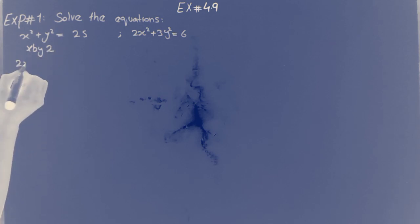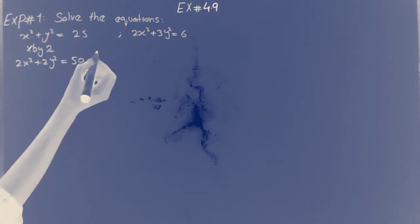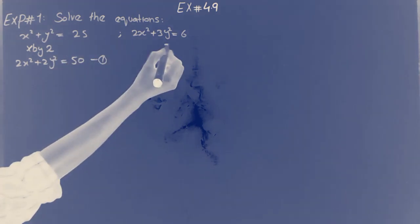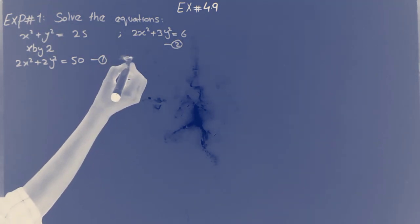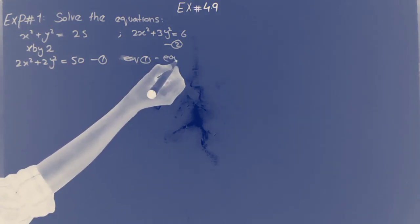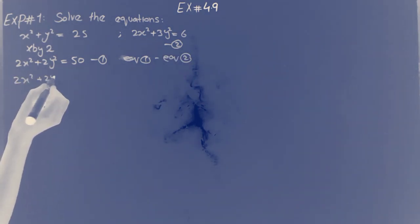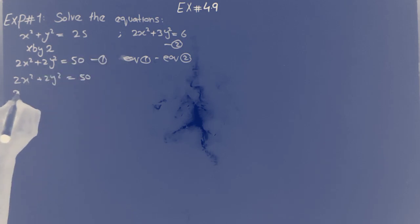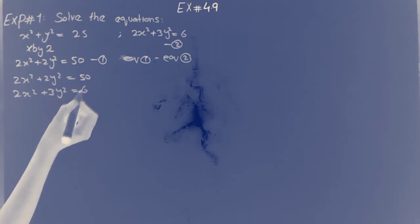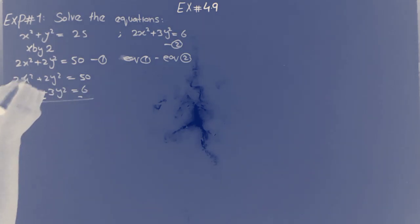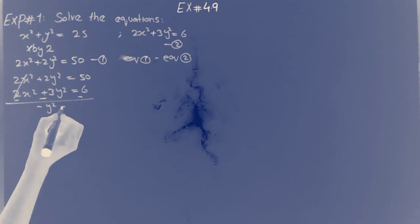This will give 2x-square plus 2y-square equal to 50. This is equation 1 and this is equation 2. Equation 1 minus equation 2: we subtract 2x-square plus 2y-square equal 50. Now we take the second equation: 2x-square plus 3y-square equal 6. If we subtract, the x-square terms cancel out.